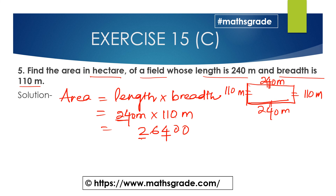So 24 × 11 = 264, and with the extra zero from 240 × 110, the result is 26,400 square metres. This is the area of the rectangular field.